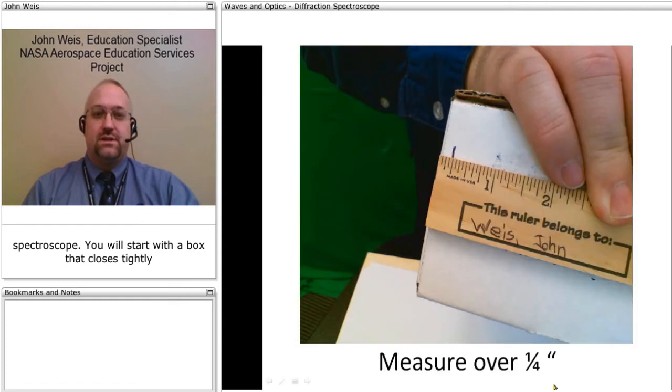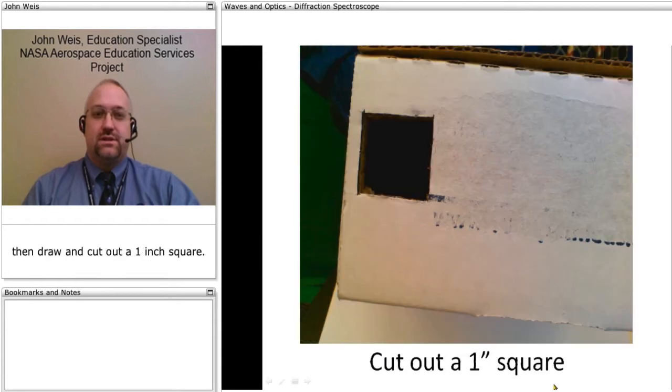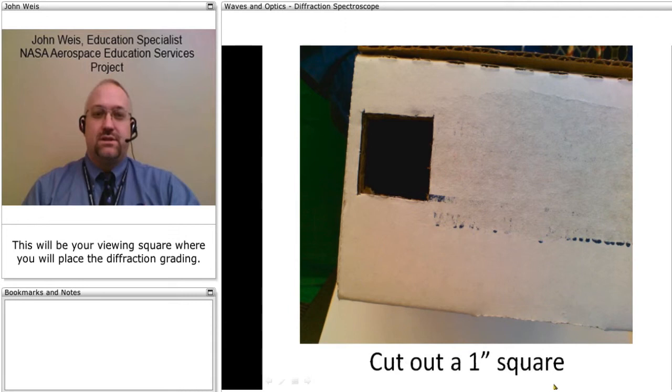You'll start with a box that closes tightly that is 10 inches by 6 inches by 2 inches deep. Along one of the 6 inch sides, you'll measure in 1 quarter inch, then draw and cut out a 1 inch square. This will be your viewing square where you'll place the diffraction grating.